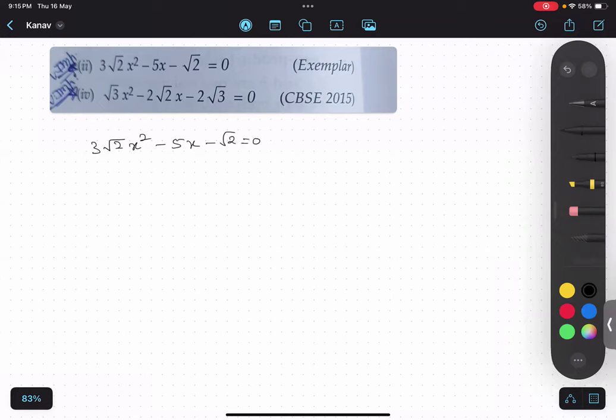So step number one, multiply first and the last. So, 3 root 2 multiplied by root 2, answer is 6, okay? Because root 2 into root 2 is 2, that will be mere 6, is that something clear?